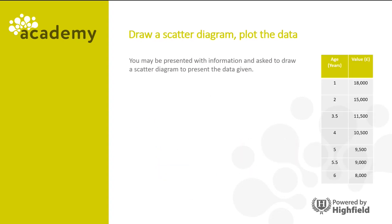Now you may be presented with information and asked to draw a scatter diagram to present the data given. So on the table on the right, this shows the age and value of seven cars, and you will be needing to draw a scatter diagram to present this data.